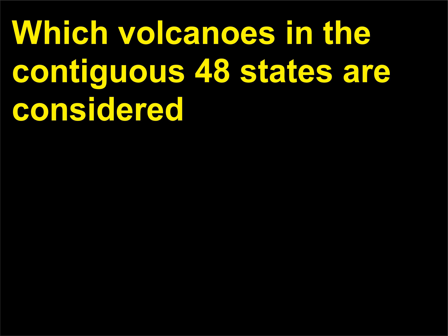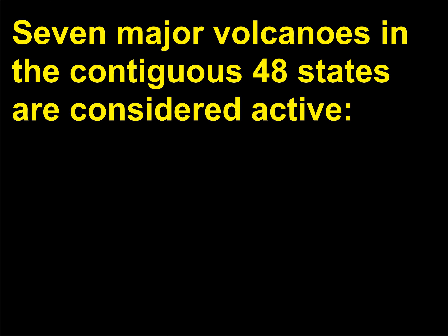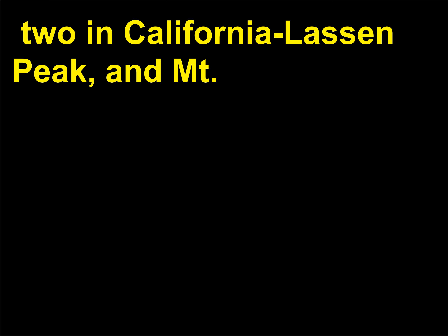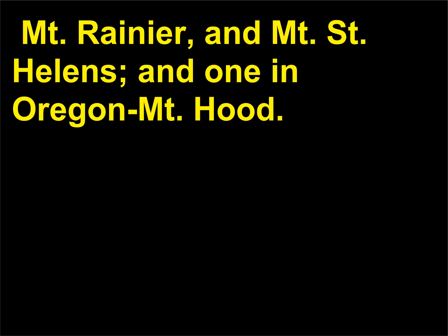Which volcanoes in the contiguous 48 states are considered active and have erupted in the past 200 years? Seven major volcanoes in the contiguous 48 states are considered active: two in California — Lassen Peak and Mt. Shasta; four in Washington — Glacier Peak, Mt. Baker, Mt. Rainier, and Mt. St. Helens; and one in Oregon — Mt. Hood.